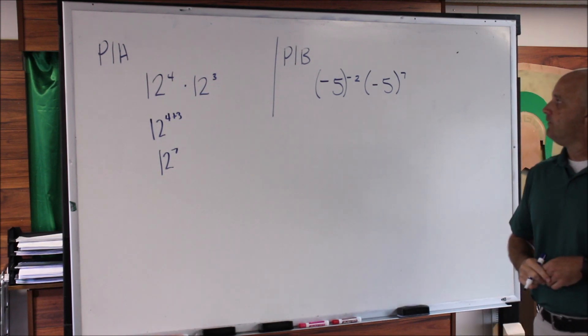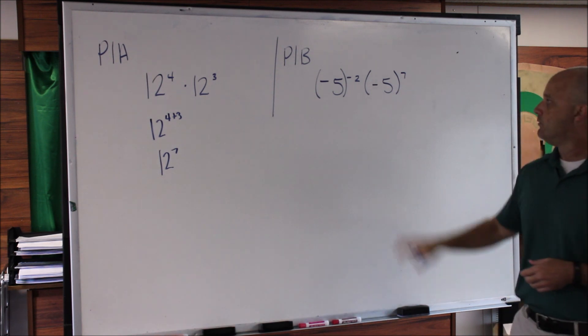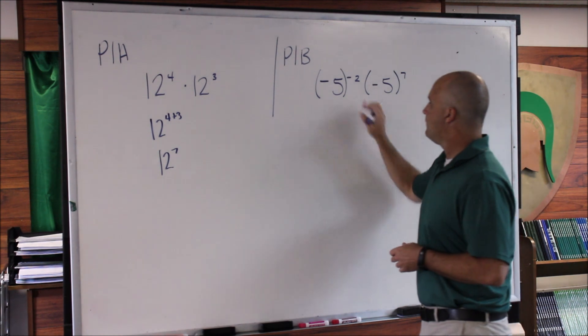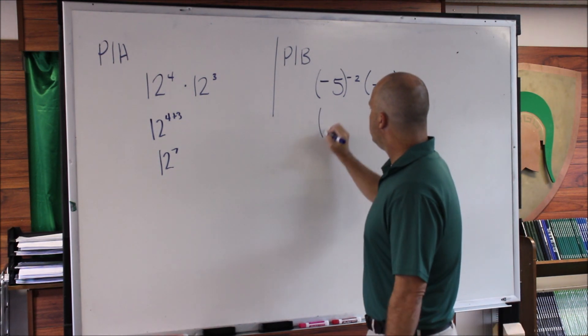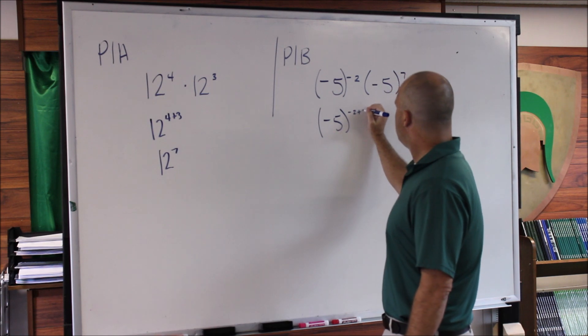In 1b, we have (-5)^(-2) × (-5)^7. Again, we have the same base, both being negative 5, so that tells us we're going to add the exponents. So we get (-5)^(-2+7).